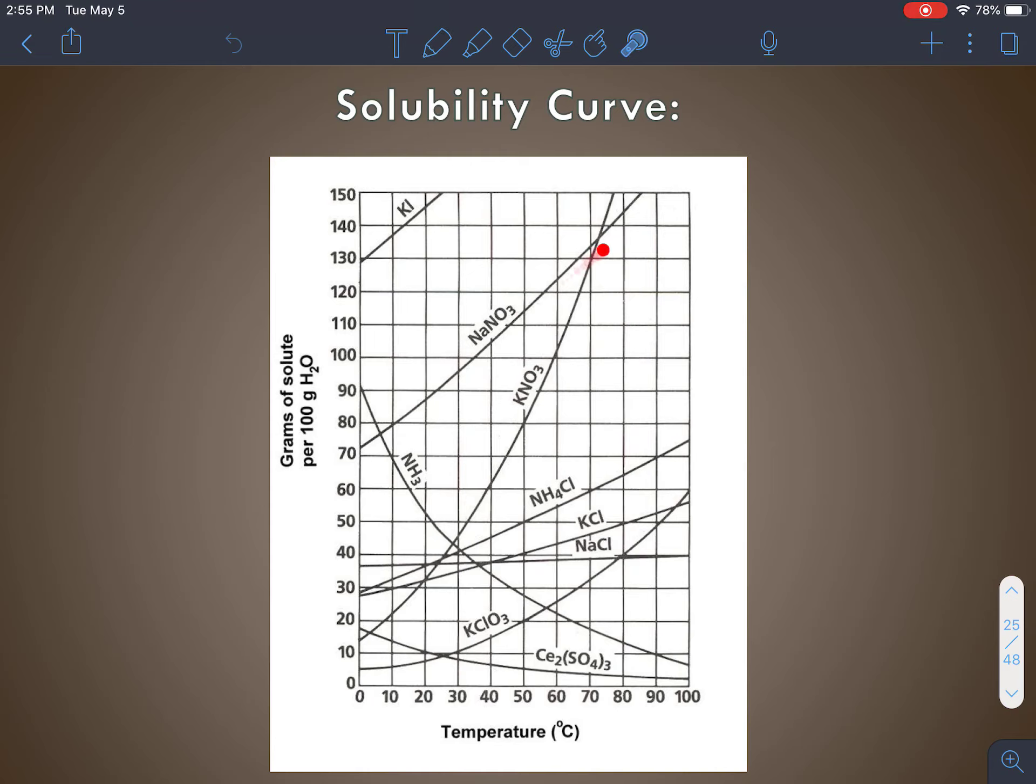So here's our sodium nitrate line and we want to see where it crosses at 60 degrees. So here's 60 degrees and it crosses about here.